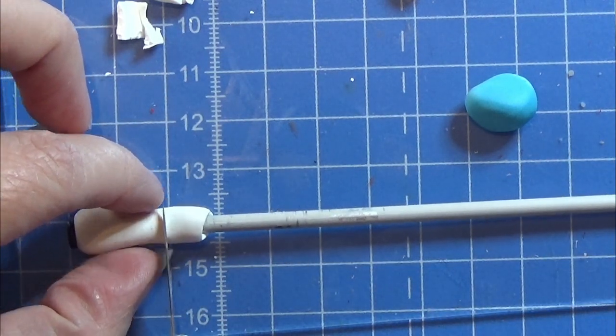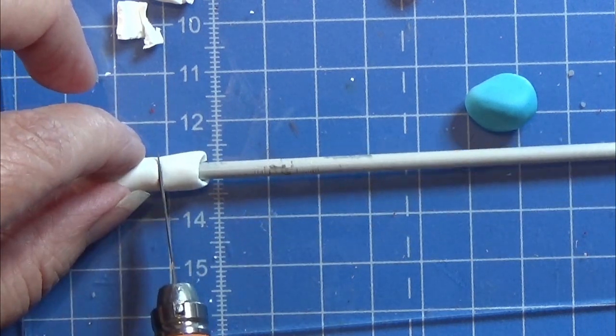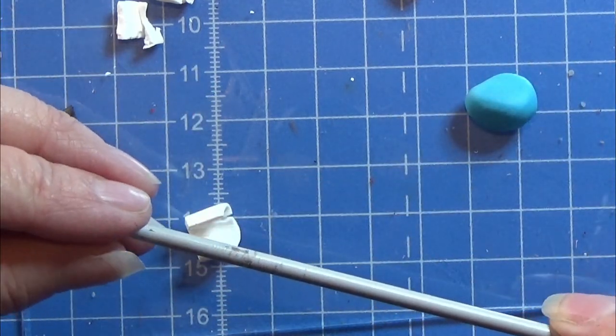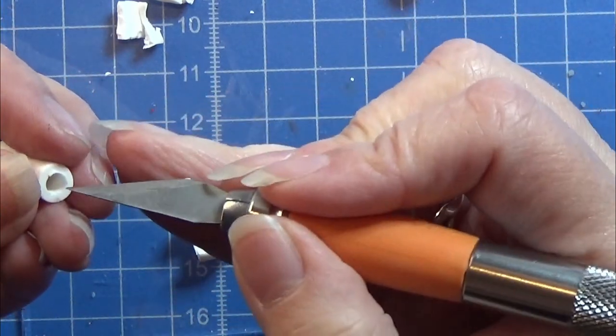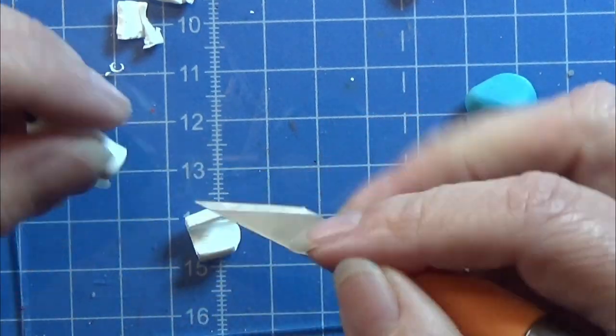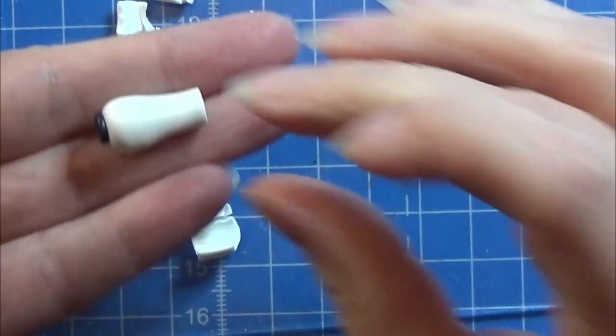I'm going to shape this end piece here and cut it off so it has two centimeters in length. Before I bake it, I wanted to make this inside a tiny bit smaller, but I think I will do that when it has been baking. So this part is ready for baking.